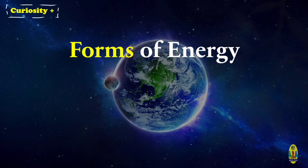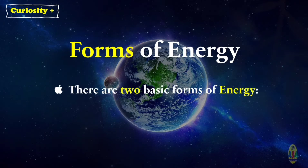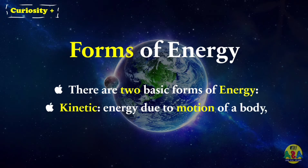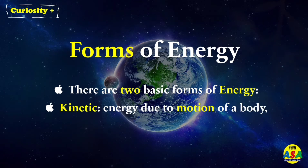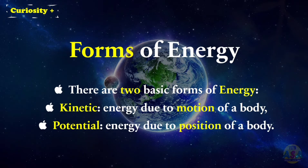Forms of energy. There are two basic forms of energy. One is kinetic energy, which is the energy due to the motion of a body, and the second is potential energy, which is the energy due to the position of a body.